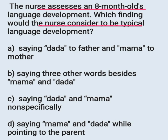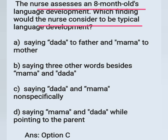A nurse is assessing the language development of an 8-month-old infant. Which one is the typical language development for the infant? The age of the infant is 8 months. The 8-month-old infant can imitate the words of the parents and can non-specifically say mama and dada. So the correct answer is Option C: saying dada and mama non-specifically. By the age of 8 months, they start to develop speech but cannot speak specifically mama and dada.